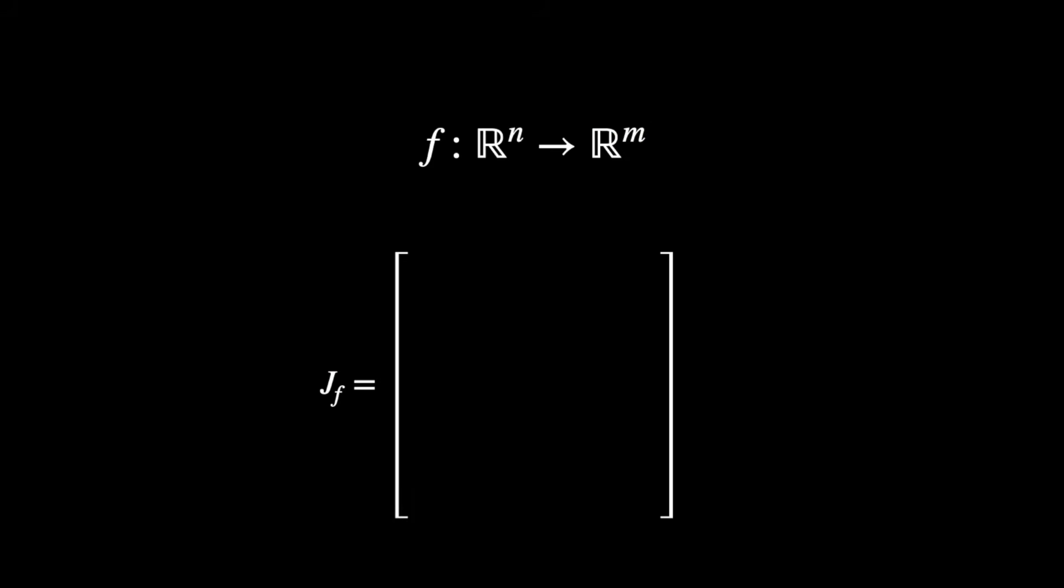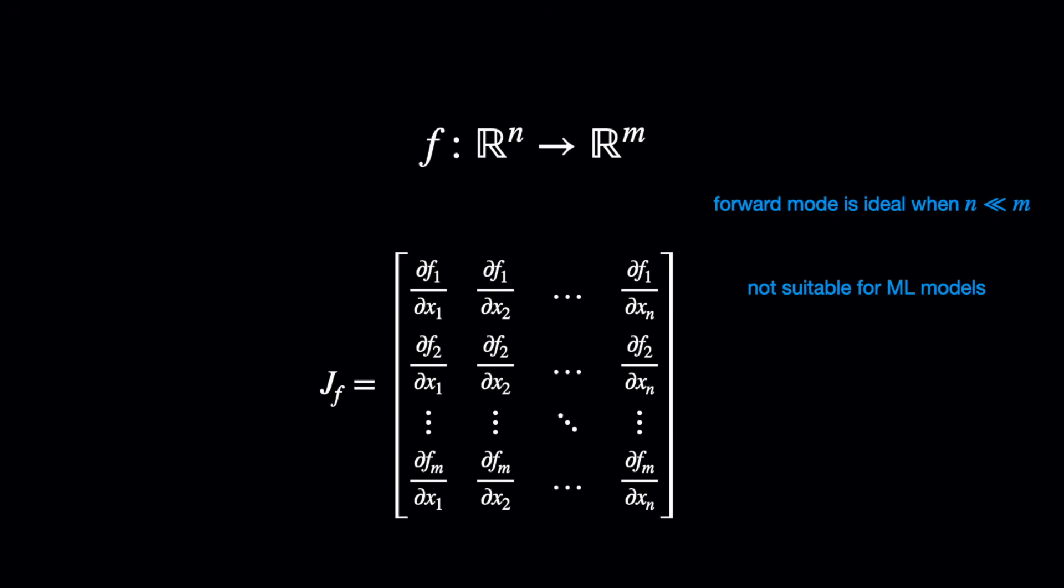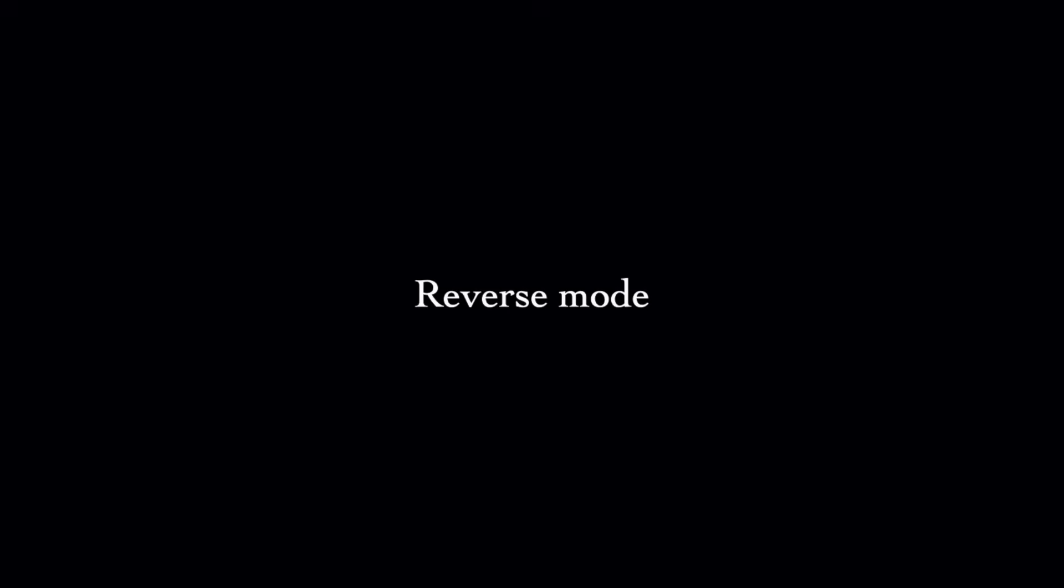Now, we saw that forward mode autodiff looks like a good route when there are only a few inputs that we're interested in partial derivatives for. But in the context of machine learning, we usually don't meet this condition. In fact, we're typically in this scenario where we have a model with many parameters, even numbering into the billions these days, and we'd like the gradient of a scalar loss with respect to these parameters. Reverse mode autodiff allows us to handle this case efficiently.